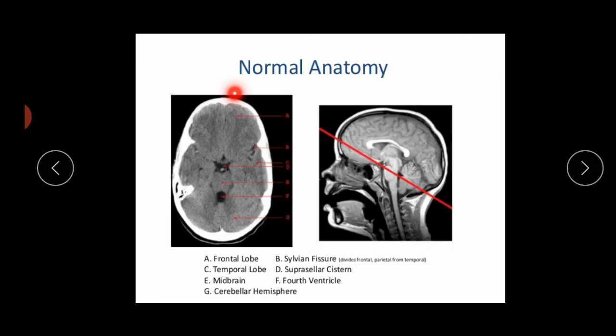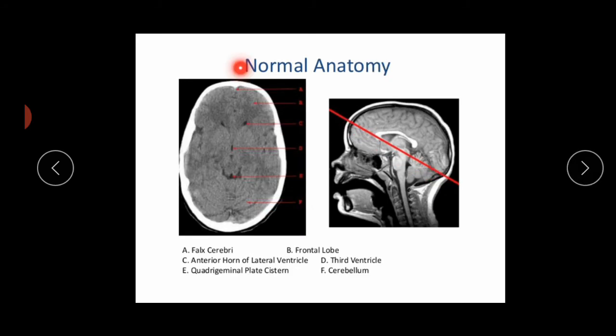On this level, we can see the frontal lobe and the Sylvian fissure. This is the temporal lobe. We can also see the suprasellar cistern, then the midbrain, the fourth ventricle, and the cerebral hemisphere.